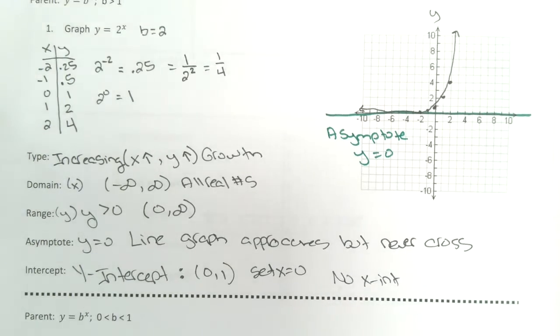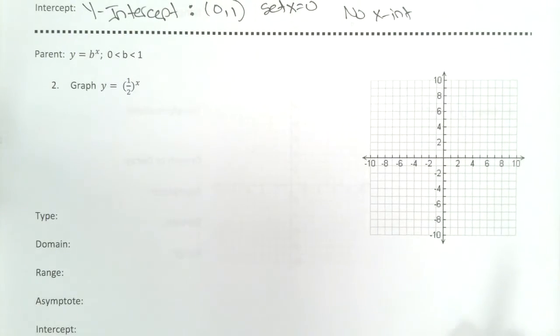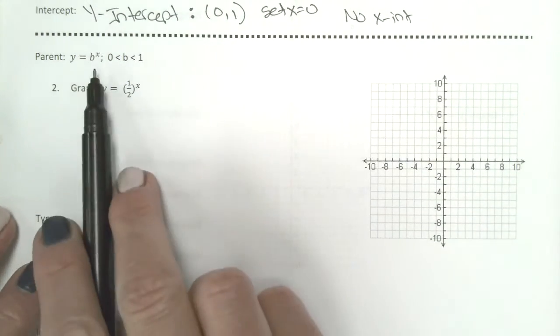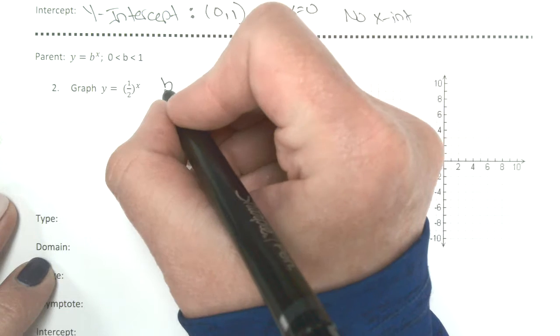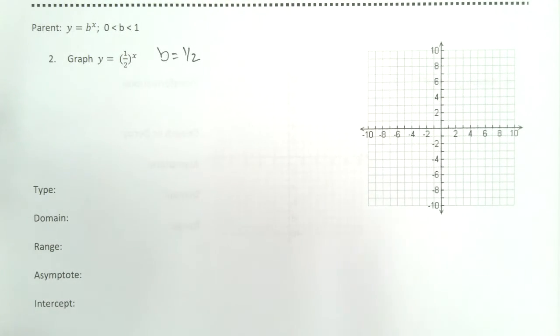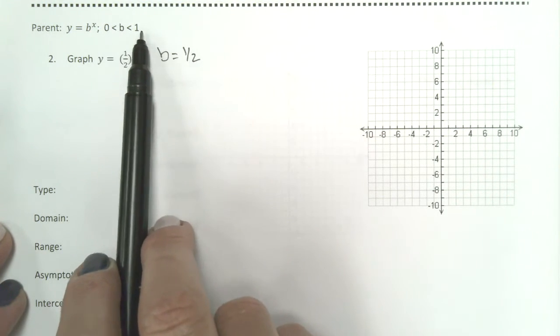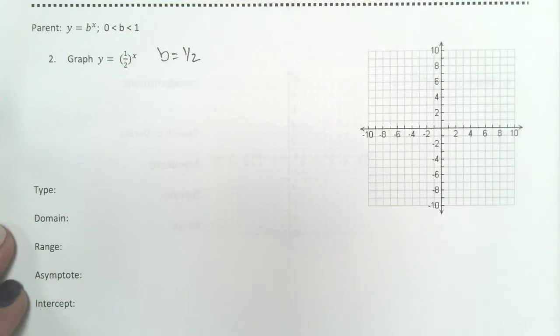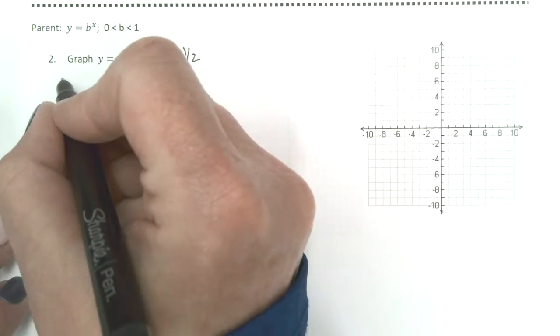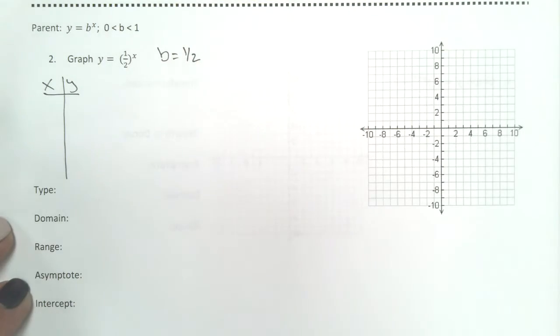All right, let's try a similar problem. But this time, my b value is a half. So as it turns out, when your b value is a fraction between 0 and 1, we get a different shape to our graph.